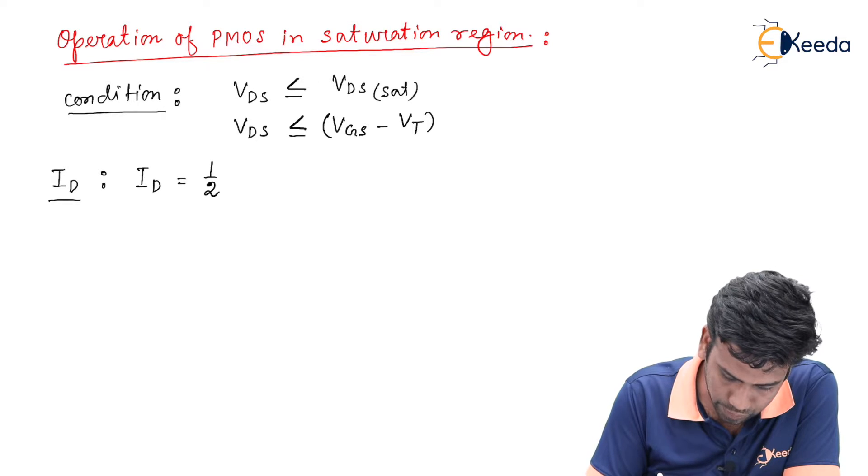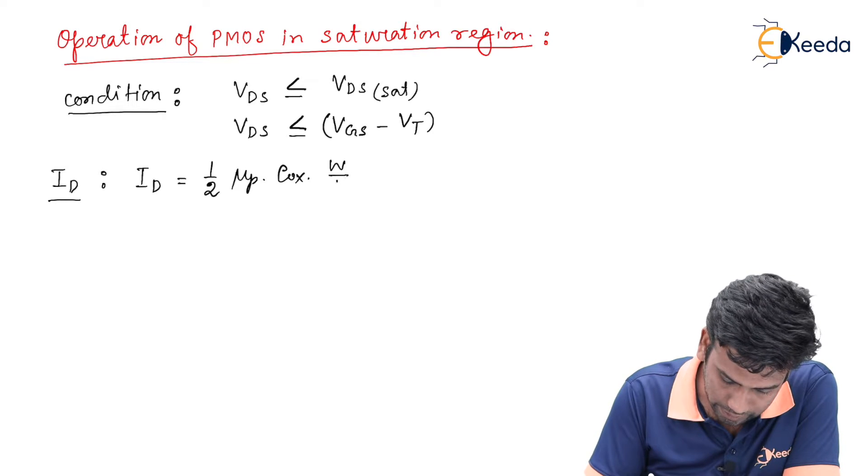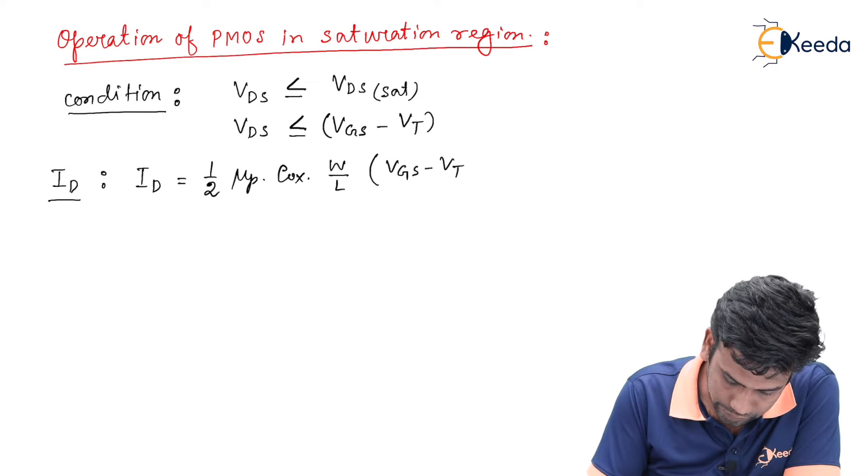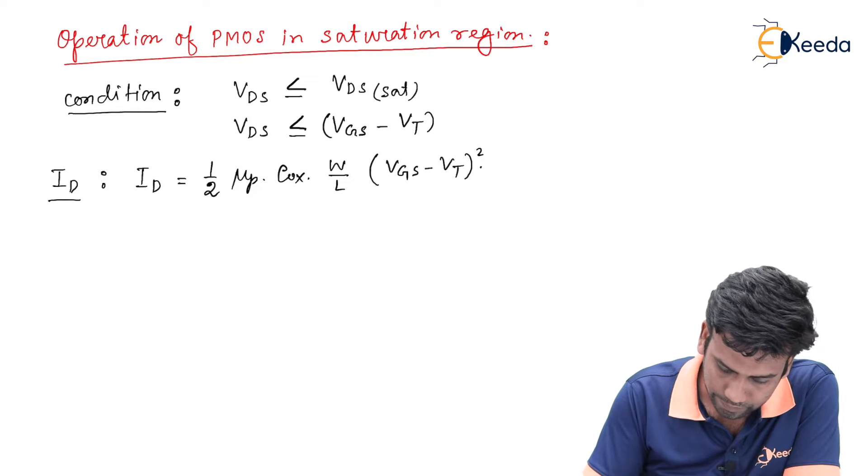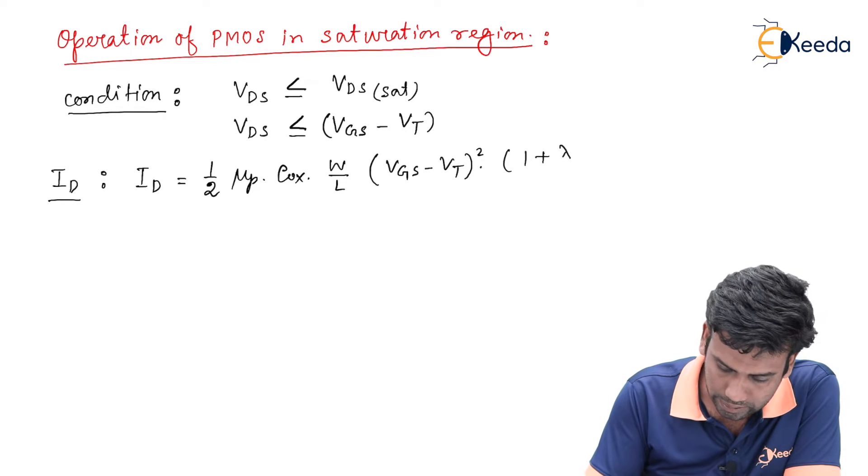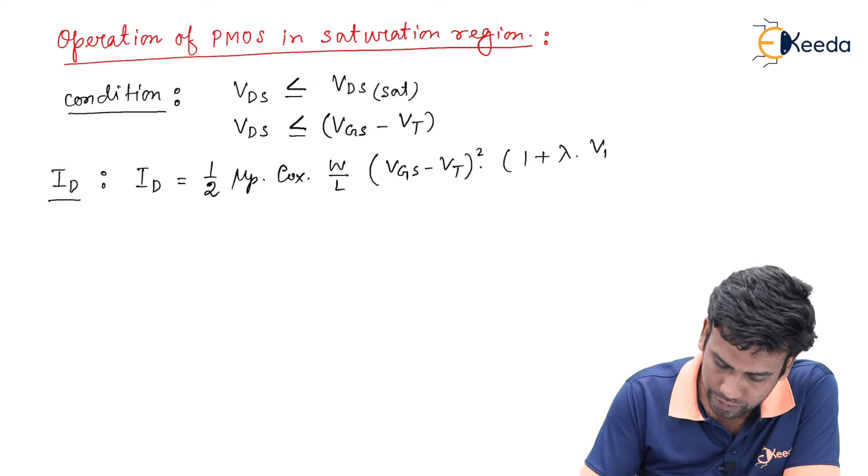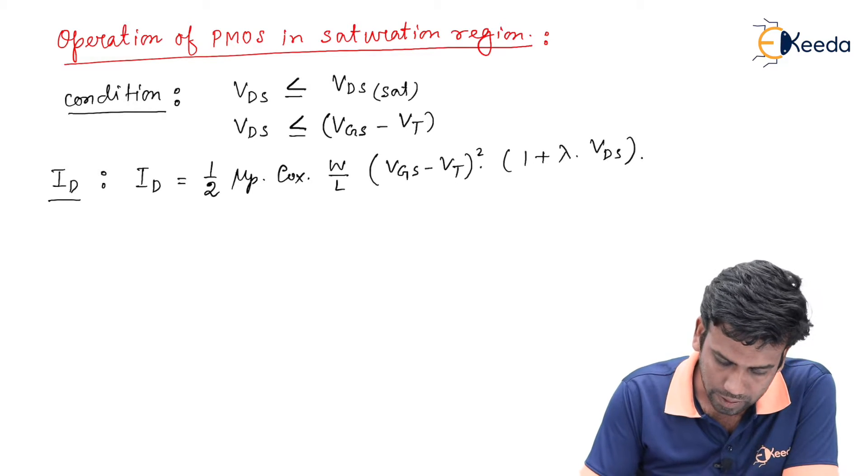Into VGS minus VT whole square into 1 plus lambda into VDS. So, if lambda equals to 0,